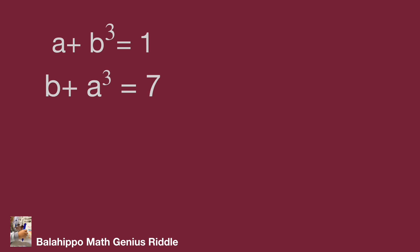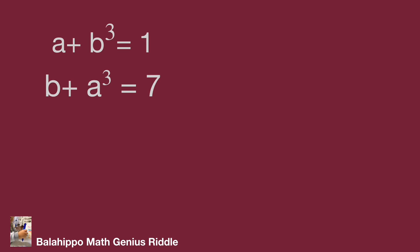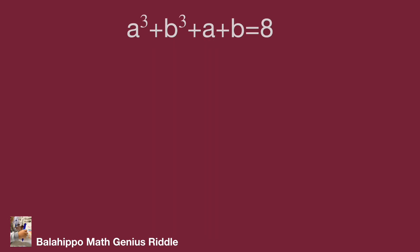If I make the connection for a, b and a cubed, b cubed, we can generate the factor a plus b in these equations. Define a plus b cubed equal to one as equation one, and b plus a cubed equal to seven as equation two. Adding equation one and equation two, we get a cubed plus b cubed plus a plus b equal to eight.